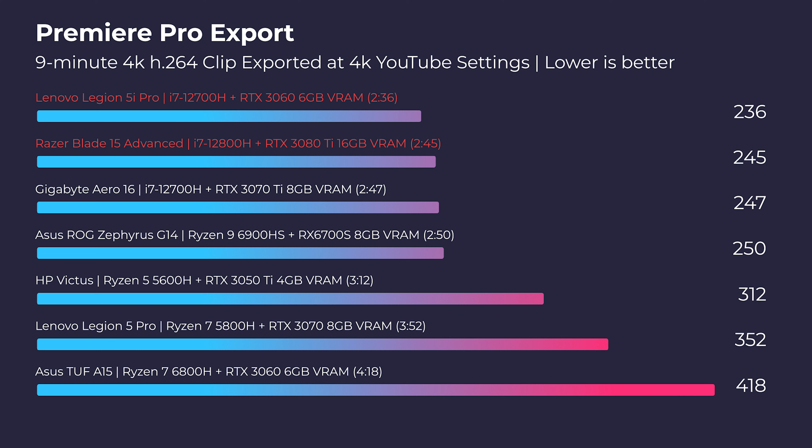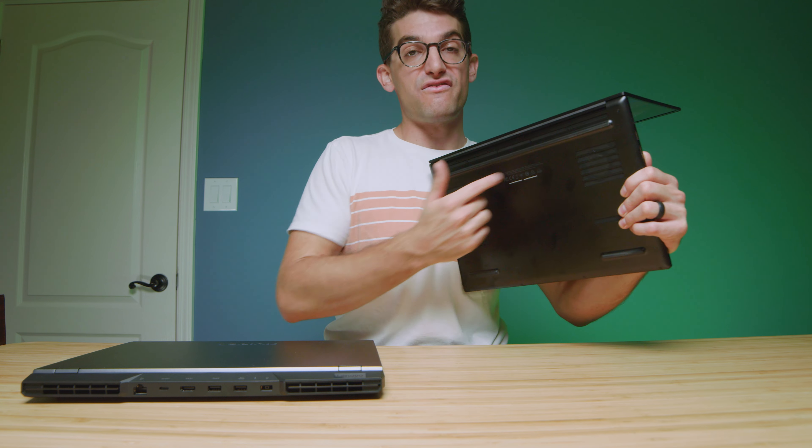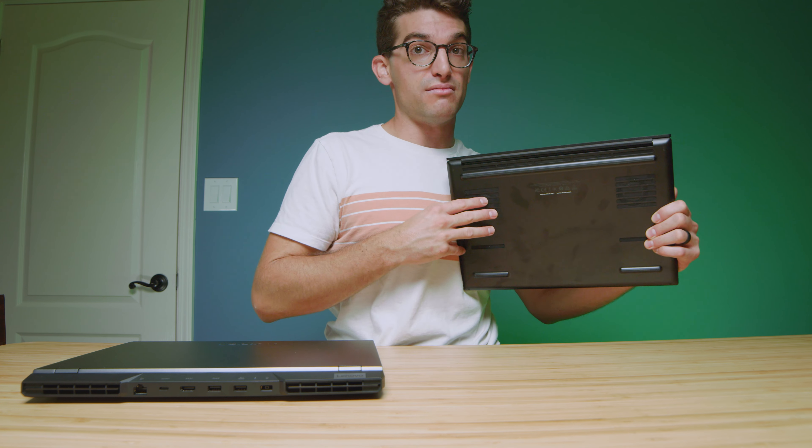This is the i7-12700H with the RTX 3060 and 16 gigs of RAM, and this is the i7-12800H, the RTX 3080 Ti, 32 gigs of RAM. This is why I'm putting this video out — around $2,500 or under for the Legion 5i Pro, and around $3,600 to almost $3,700 for the Razer Blade 15 Advanced model.